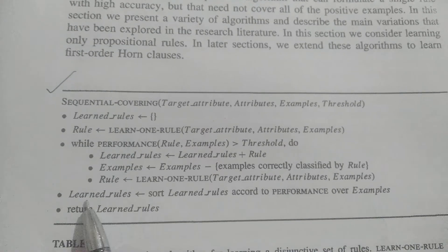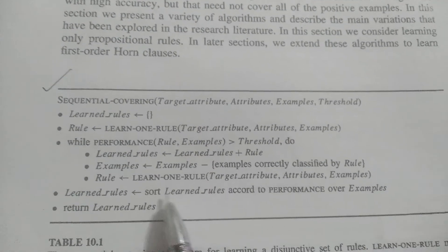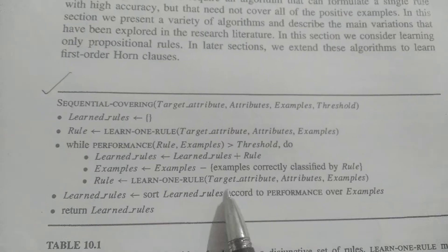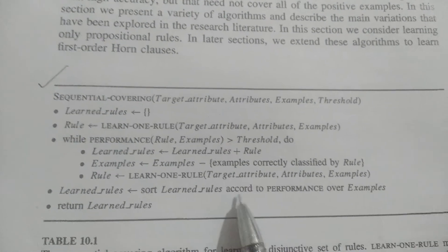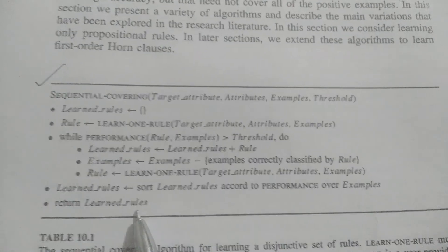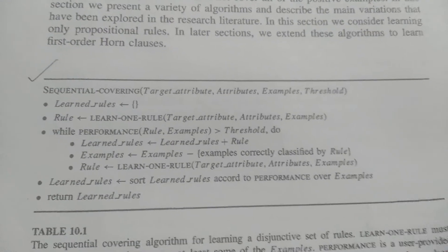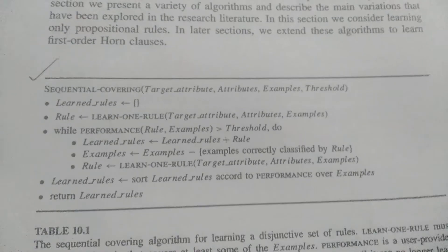Then, whatever learned rules we have, I sort them according to performance. High performance rules are given higher preference. Finally, return the learned rules. This is about the sequential covering algorithm. Thank you.